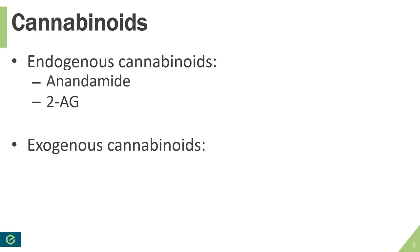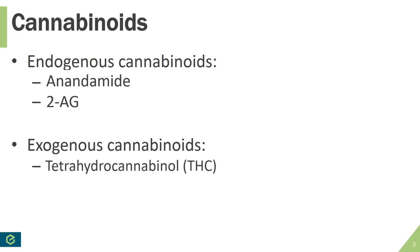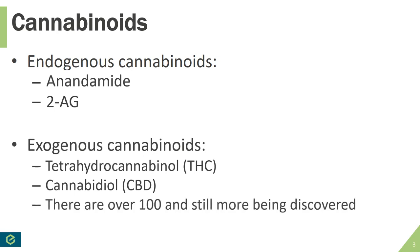In addition to endogenous cannabinoids, there are exogenous cannabinoids. Exogenous is the opposite of endogenous — meaning made outside of the body. These are the cannabinoids you get from the cannabis plant itself. Some of the more common exogenous cannabinoids people are familiar with are tetrahydrocannabinol, which is THC, and cannabidiol, which is CBD. In reality, there are actually well over 100 cannabinoids that have been studied to date, and more are still being discovered.